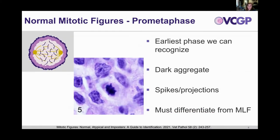The next phase is prometaphase, the earliest phase we can recognize. There is further compaction of the nuclear material, and the chromosomes form a dense cluster in the center of the cell. The key feature of prometaphase is that we can see spikes and projections coming from that chromosome cluster — that's the key feature differentiating this mitotic figure from a mitotic-like figure. The biggest overlap would be with a mitotic-like figure having a central aggregate, which would be our differential for prometaphase. At the end of prometaphase, you can also see a rosette or ring formation.